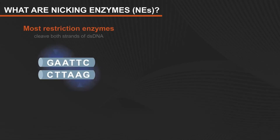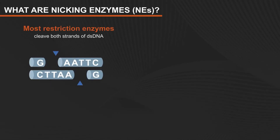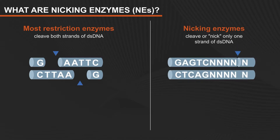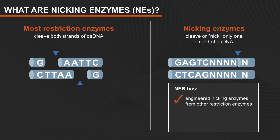Most restriction enzymes cleave both strands of double-stranded DNA. However, nicking endonucleases, or nicking enzymes, cleave only one strand, thereby nicking the double-stranded DNA. NEB has engineered nicking enzymes from other restriction enzymes and also has cloned, expressed, and purified naturally occurring DNA nicking enzymes.